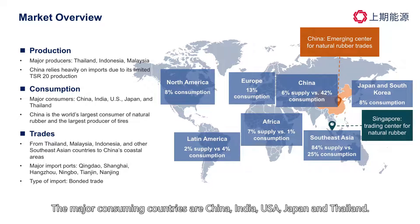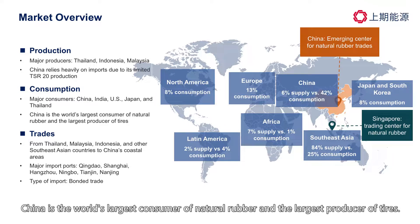The major consuming countries are China, India, United States of America, Japan, and Thailand. China is the world's largest consumer of natural rubber and the largest producer of tires.